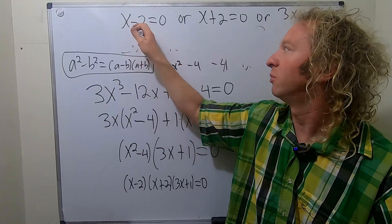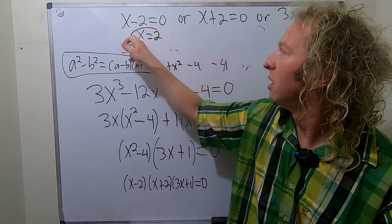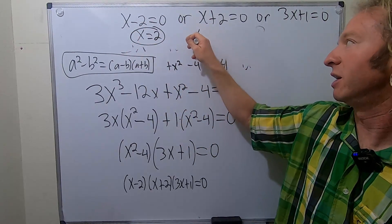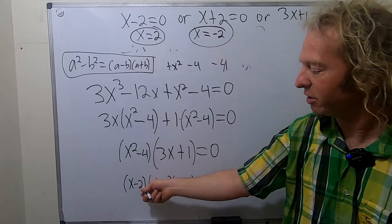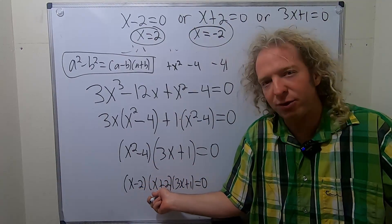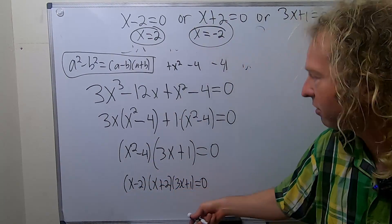So here we add 2. We get 2. Pretty easy. Here we subtract 2. So we get negative 2. Pretty easy. Which you can kind of see from down here. 2 makes this 0. Negative 2 makes this 0. So many people just go to the answer.